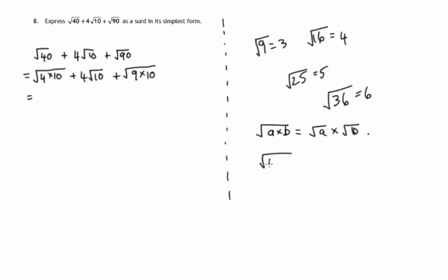For instance, if we have 4 times 9, that's the square root of 36 which is 6, and the square root of 4 times the square root of 9 is 2 times 3 which is 6 again.